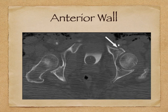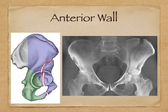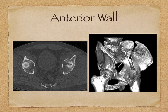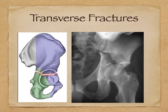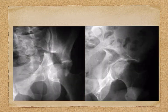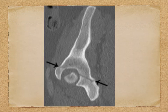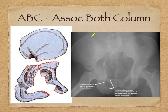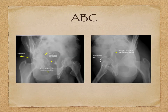The anterior wall fracture shows an oblique line in the anterior quadrant not reaching the medial side. The anterior column fracture shows a break with a horizontal line going all the way medially. The transverse fracture shows both lines broken with a horizontal line crossing through. In the associated both column fracture, both the ilioischial and iliopectineal lines are disrupted, and you can clearly see the spur sign on the Judet views.